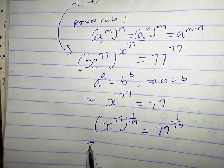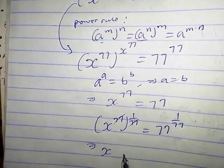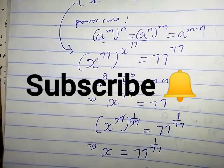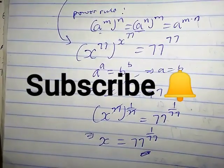So this implies that x, because this guy cancels out of this guy, equals 77 raised by 1 over 77. So there is the required solution. Thanks for watching.